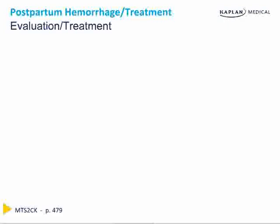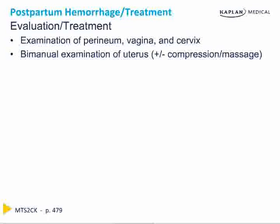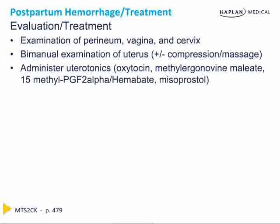Evaluation and treatment of postpartum hemorrhage is systematic. First examine the perineum, vagina, and cervix to rule out a laceration. Next, a bimanual exam ensures there is no uterine rupture and no retained products. If unremarkable, bimanual compression and massage should be performed and will control most cases. If unsuccessful, administer uterotonics: oxytocin, methylergonovine maleate (Methergine), 15-methyl prostaglandin F2-alpha (Hemabate), or misoprostol (Cytotec). Importantly, Methergine is contraindicated in hypertensive patients, Hemabate cannot be given to asthmatics, but misoprostol is contraindicated in neither.